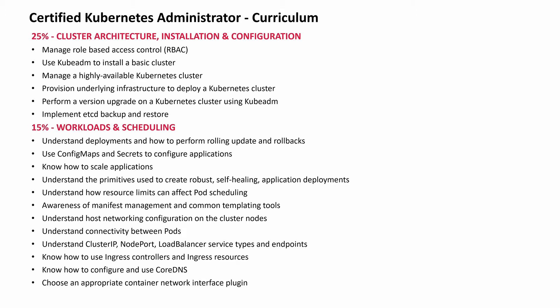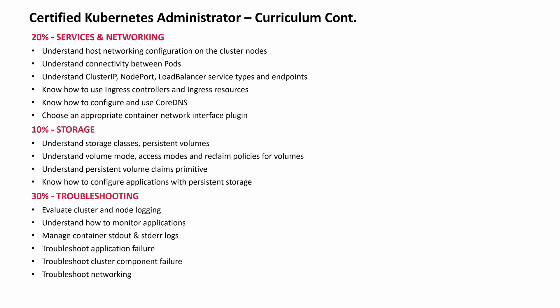For 25% and 15%, you should get 100 out of 100 in the exam — that is important. 20% is services and networking, covering networking configuration between cluster nodes, how pod networking works, and how to configure and use CoreDNS. 10% for storage: you have to understand storage classes, PVs (persistent volumes), and persistent volume claims, the policies to claim those volumes, and how to configure applications with persistent storage.